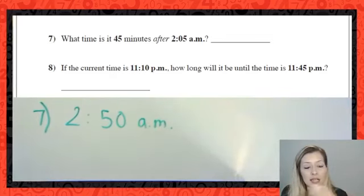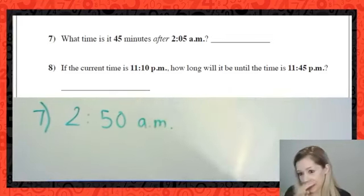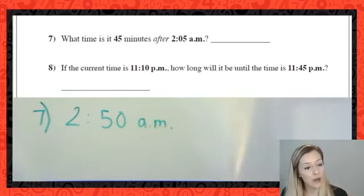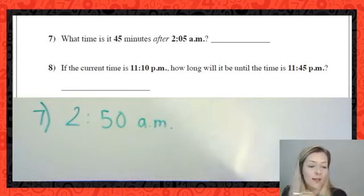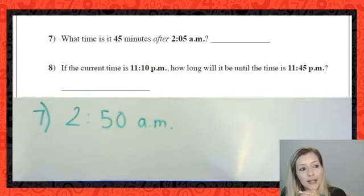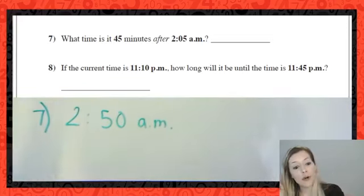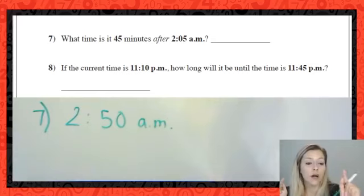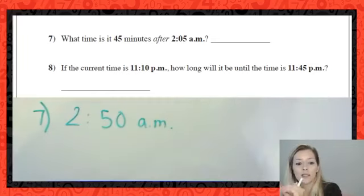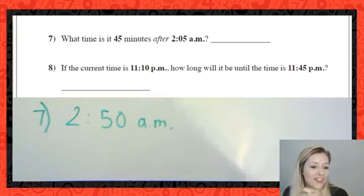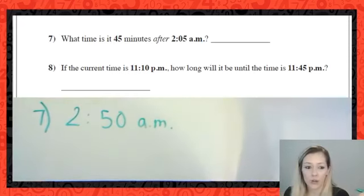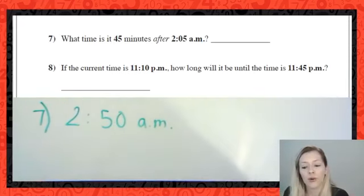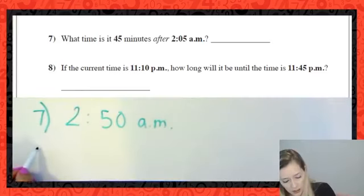45 minutes is 15 minutes less than a full hour. So 45 minutes is a quarter less than a full hour. A full 60 minutes past 2:05 would be 3:05, but I only want three-quarters of an hour — a quarter less. So I subtract 15 minutes from 3:05 to get 2:50. You can use that reasoning or simply count forward the 45 minutes — either method works.